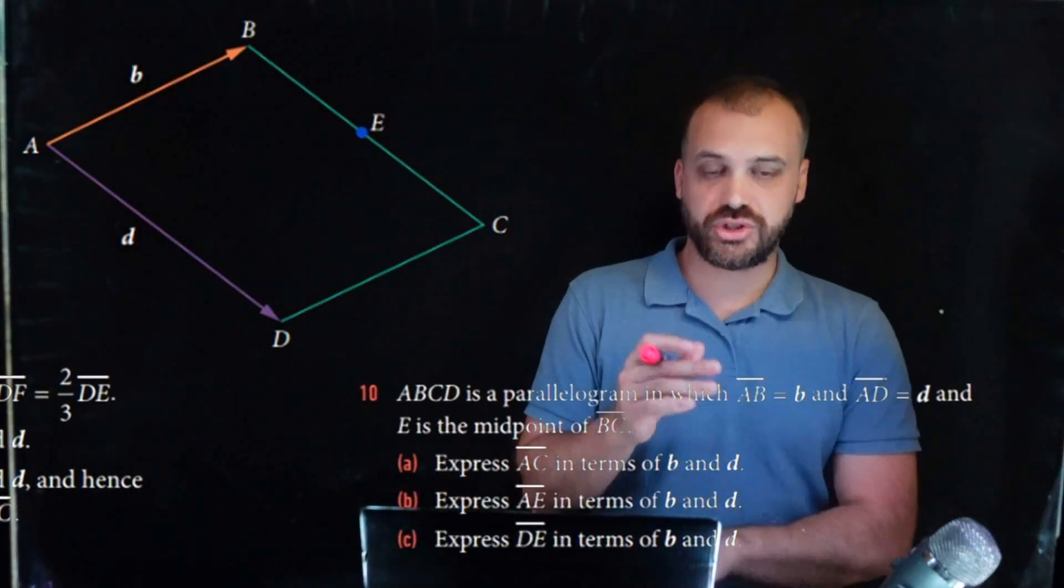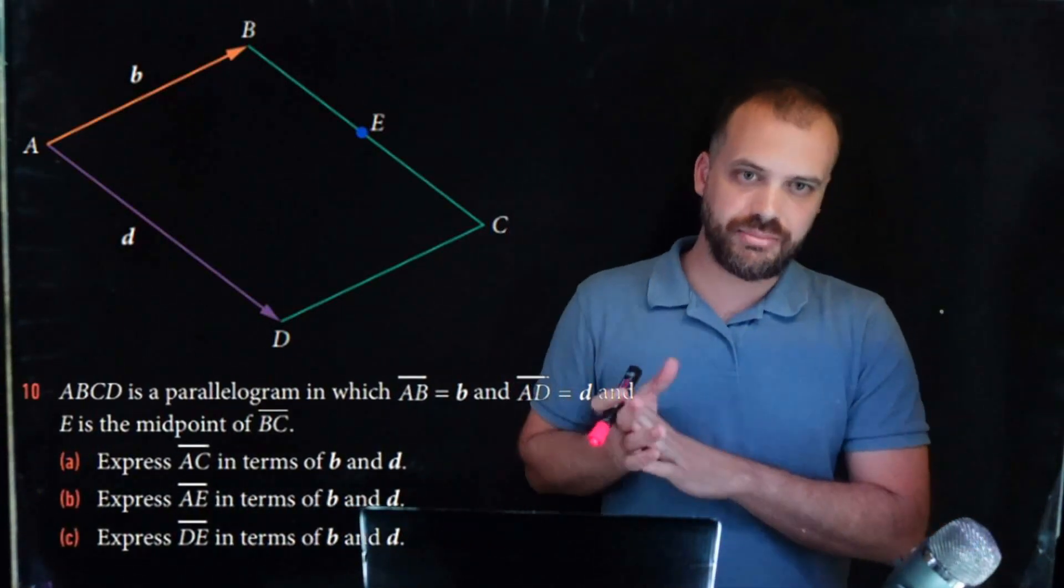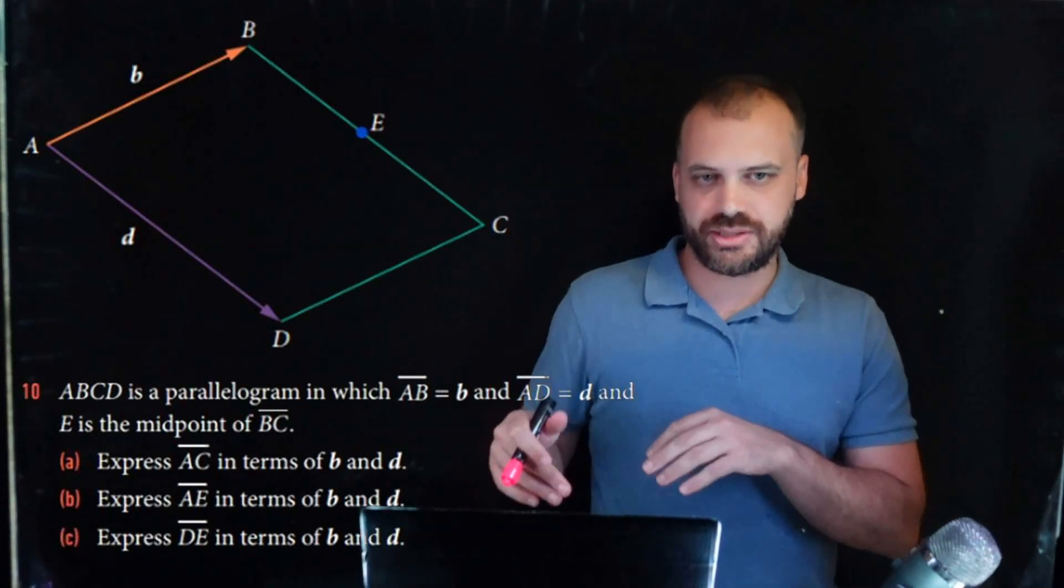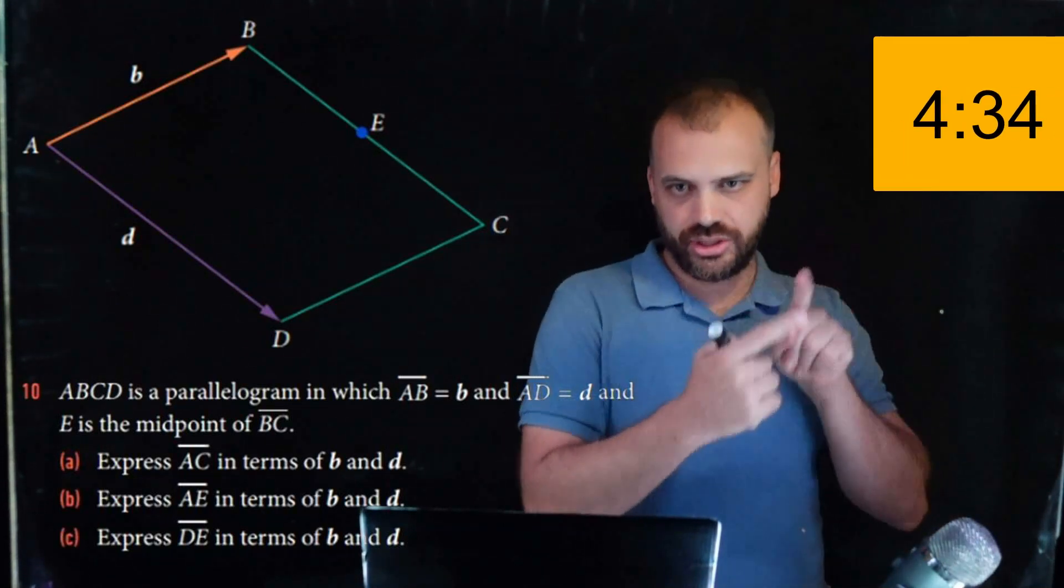So I'm going to first just really fast jump through A, B, and C. If you don't want to see A, B, and C, just fast forward to that time right there.